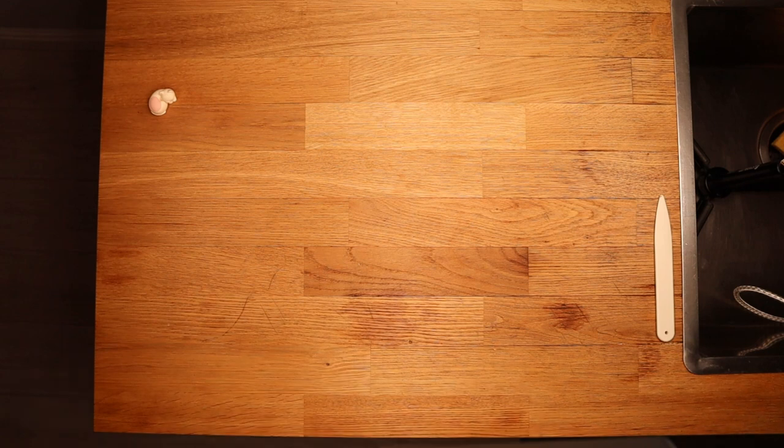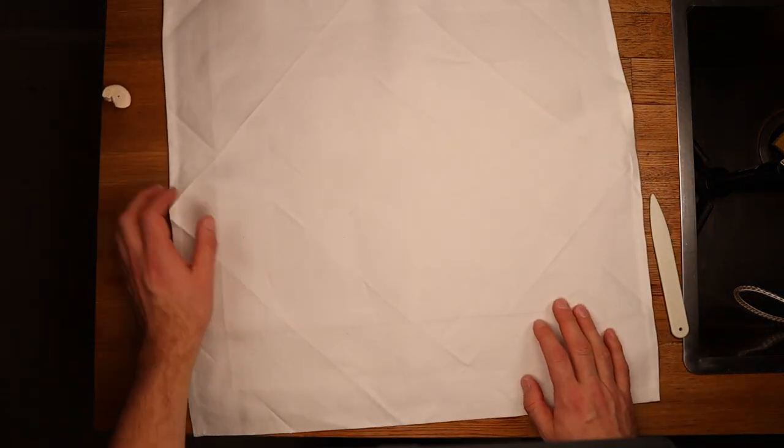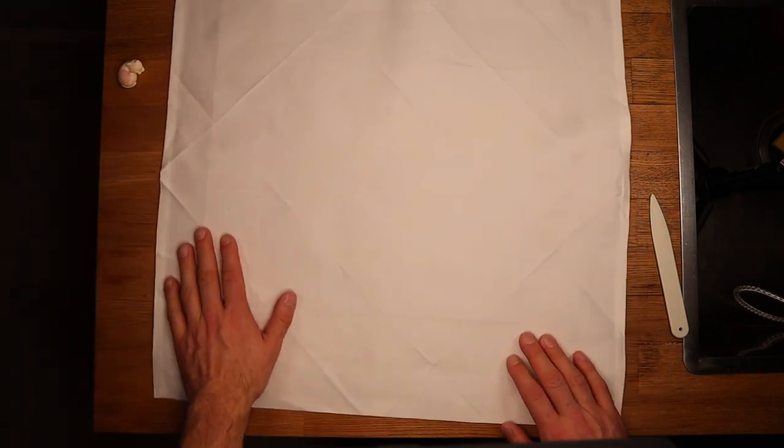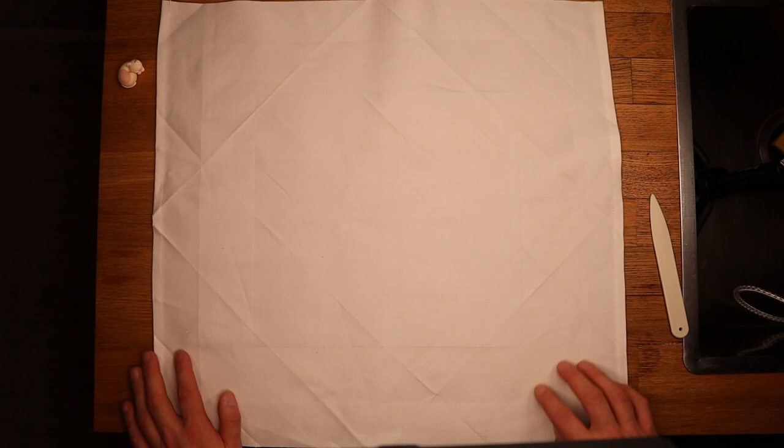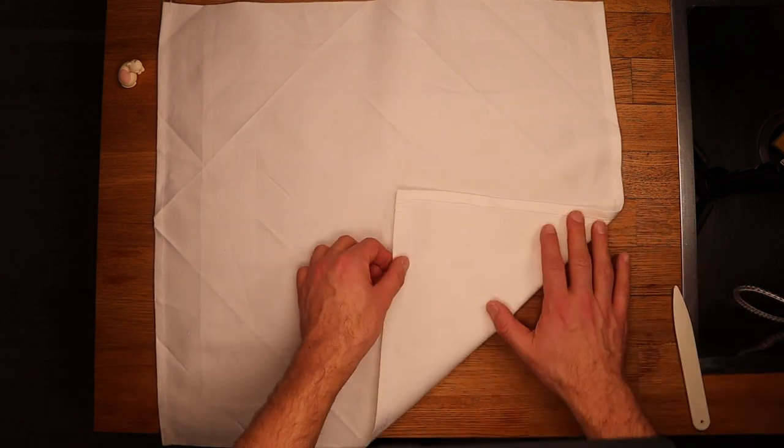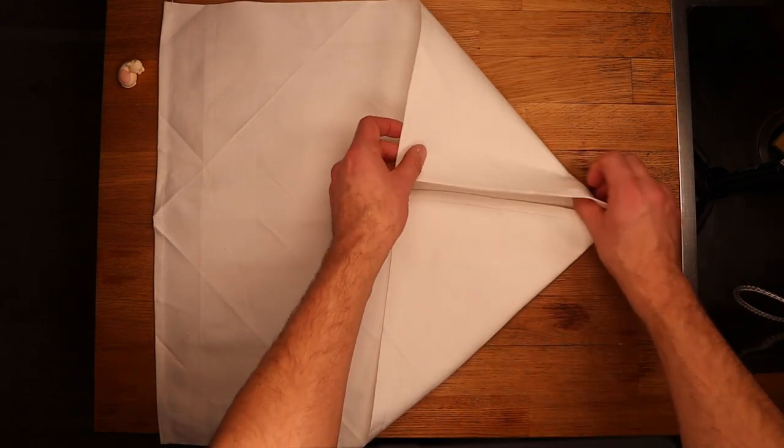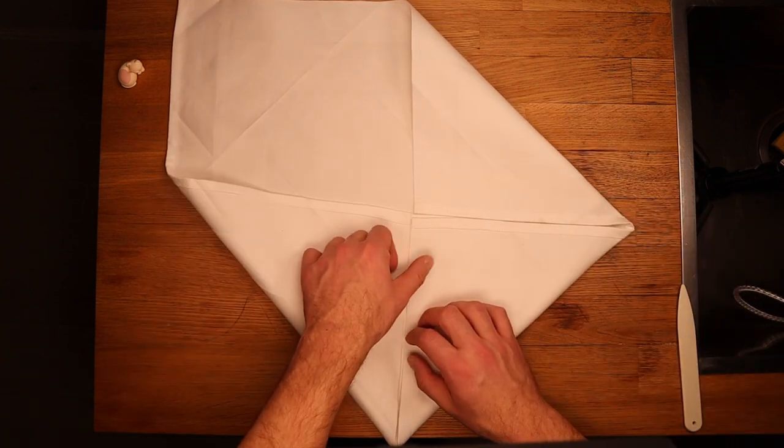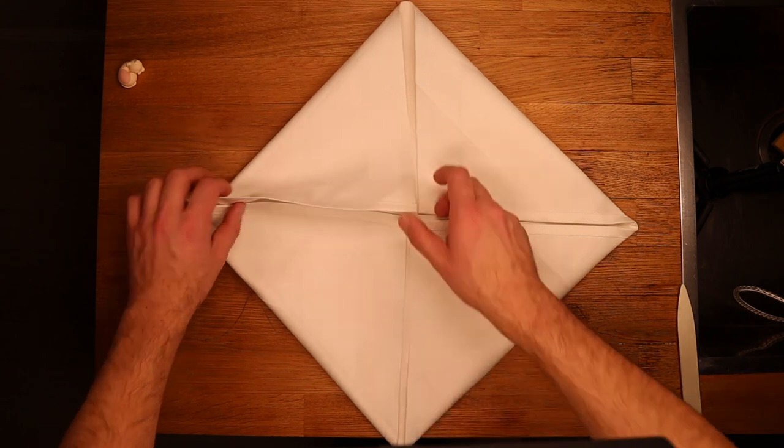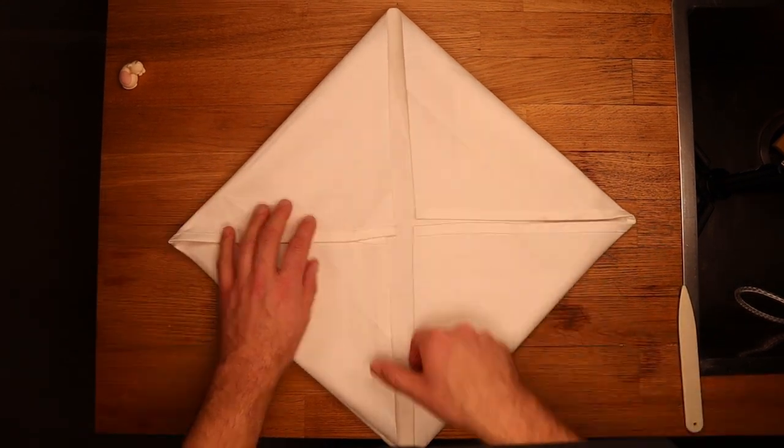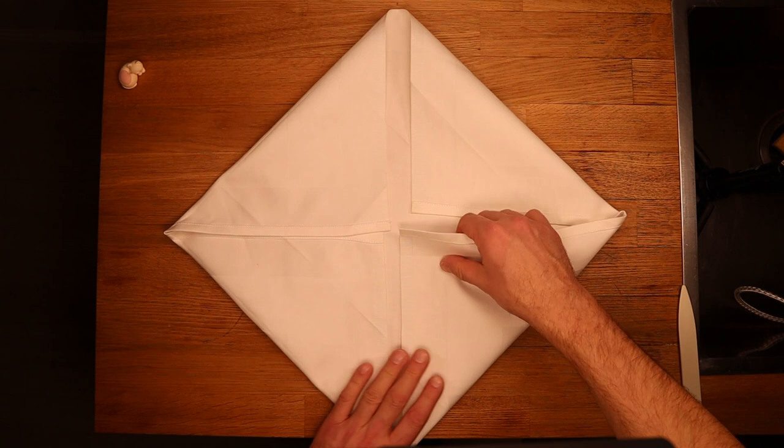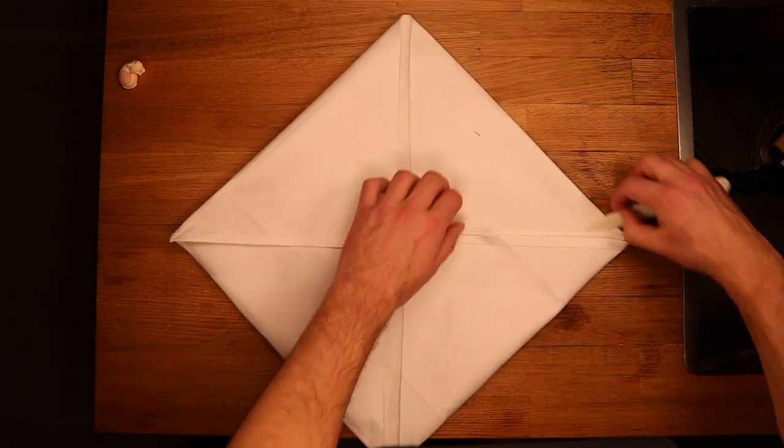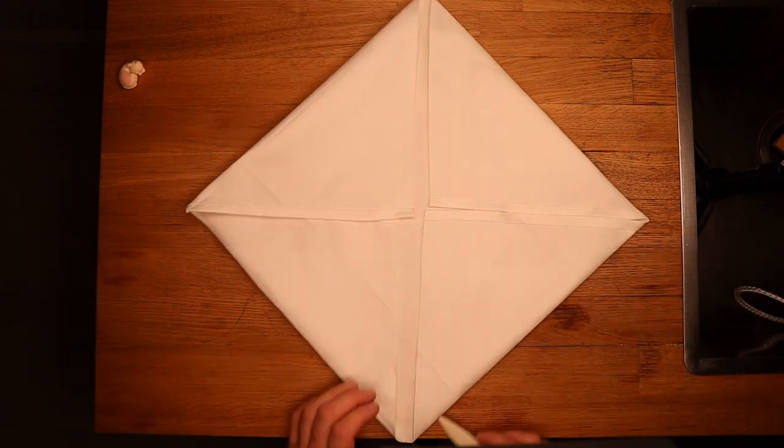We commence the fold with a flat napkin, good side up. Fold all four corners to the middle, be precise here. Once you have folded everything in the middle, I highly recommend to crease the edges.